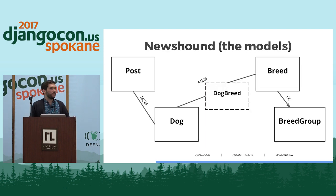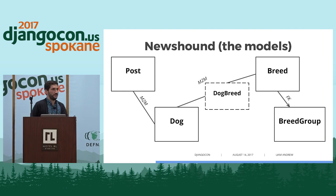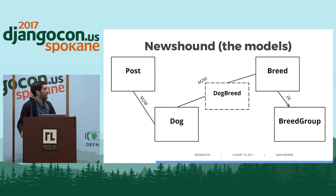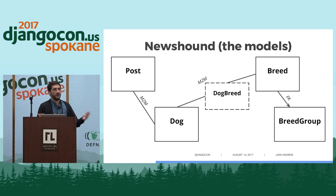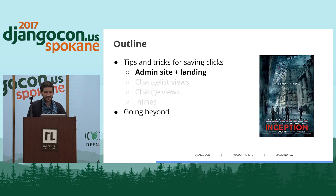The data model in Newshound basically has blog posts, and a post might be about individual dogs. Each dog can be part of multiple breeds — that's a custom through-model because a dog can be 25% schnauzer and 75% chihuahua. Each breed is part of a breed group, such as the toy group, the herding dog group, or the terrier group.